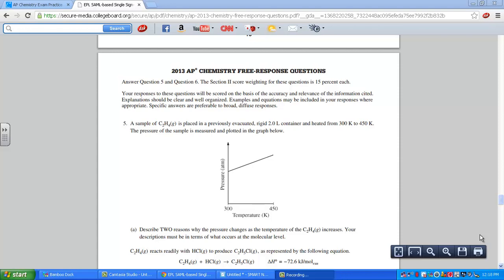Free response question 5 on the 2013 AP Chem exam. We have a sample of C2H4 in a gaseous form that's placed in an evacuated, rigid container. It's 2 liters big.